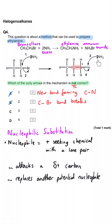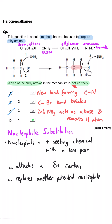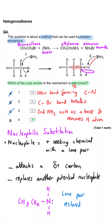Arrow three — the second ammonia acting as a base and removing the hydrogen — is also correct, which means arrow four is the wrong answer. Arrow four shows the hydrogen taking both electrons from the bond, which it doesn't do. Instead, the pair of electrons is returned to the nitrogen, restoring its lone pair and making it neutral overall. So arrow four is the incorrect arrow.